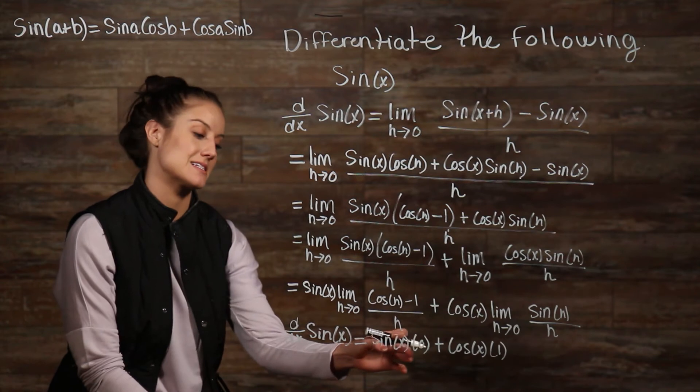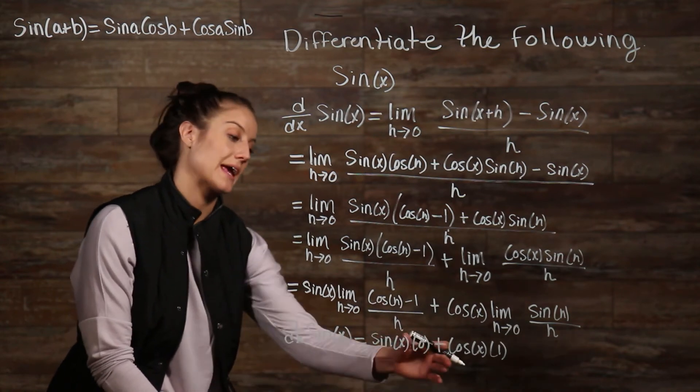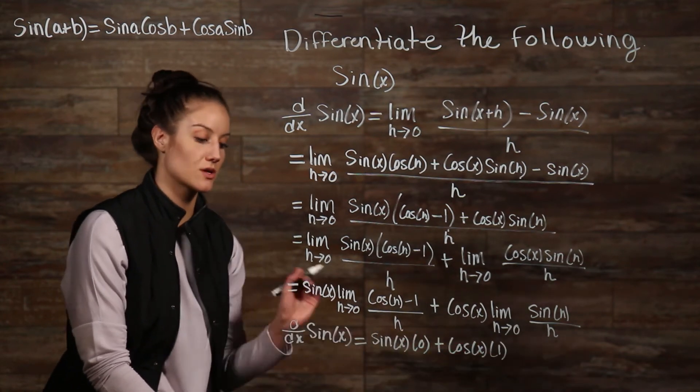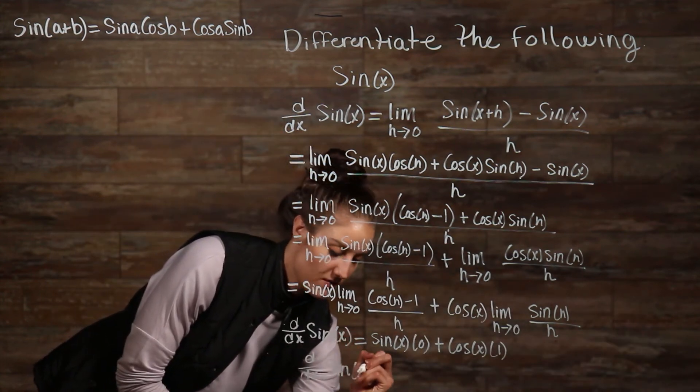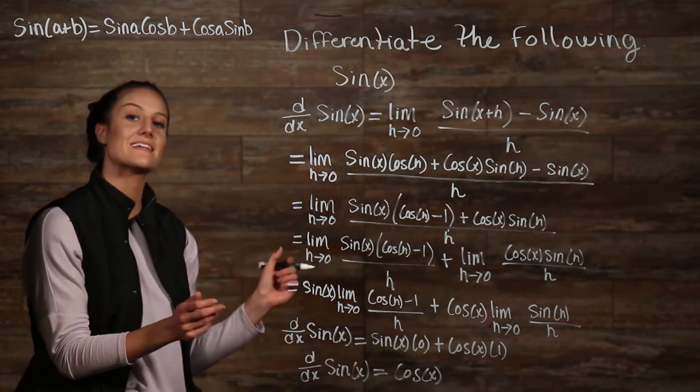The derivative of sine of x is equal to cosine of x. Well, since sine of x times 0 is just 0, and cosine of x times 1 is just cosine, that means that we are left with the derivative. And that's our answer.